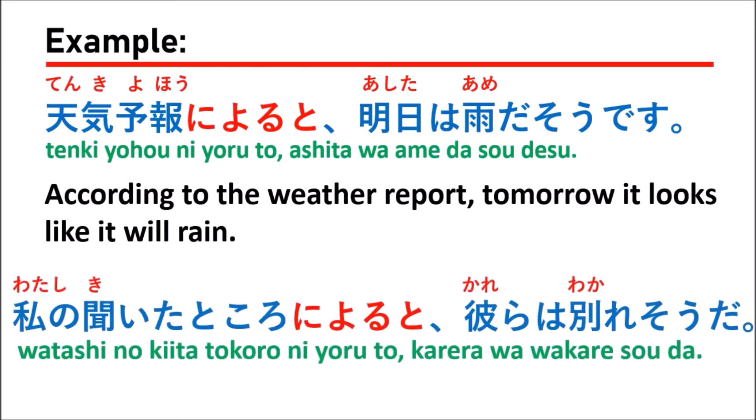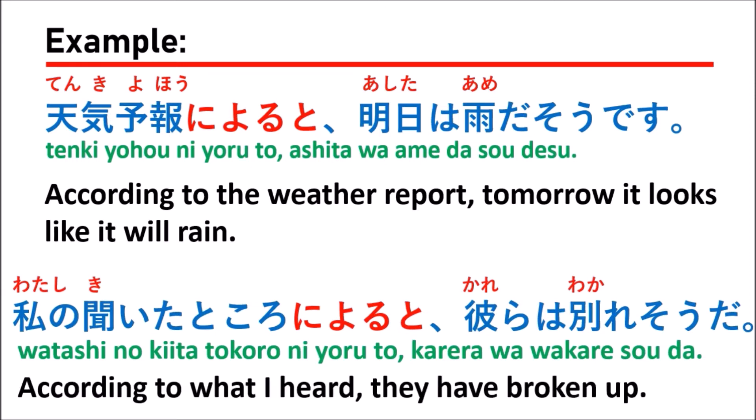The next example: 私の聞いたところによると彼は分かれそうだ。 Which means: according to what I heard, they have broken up.